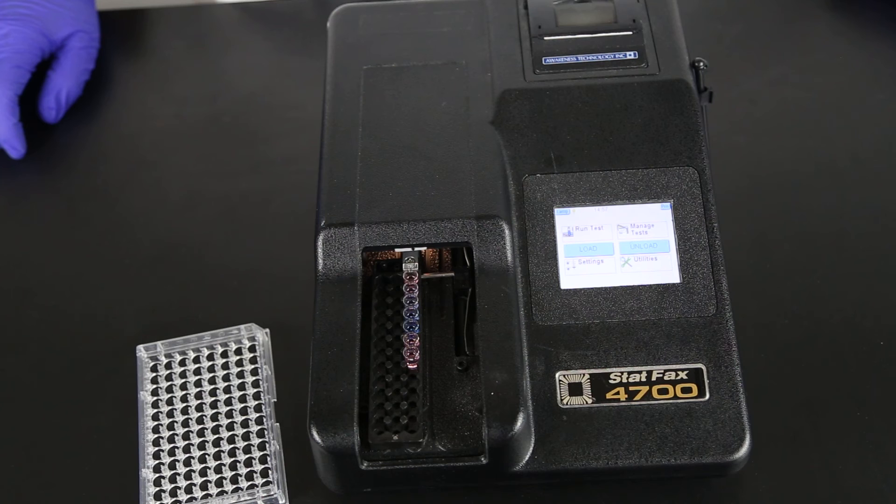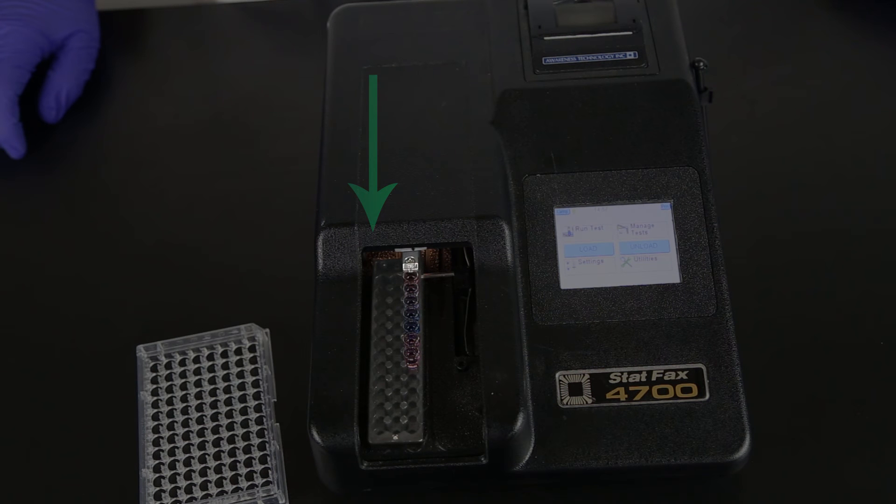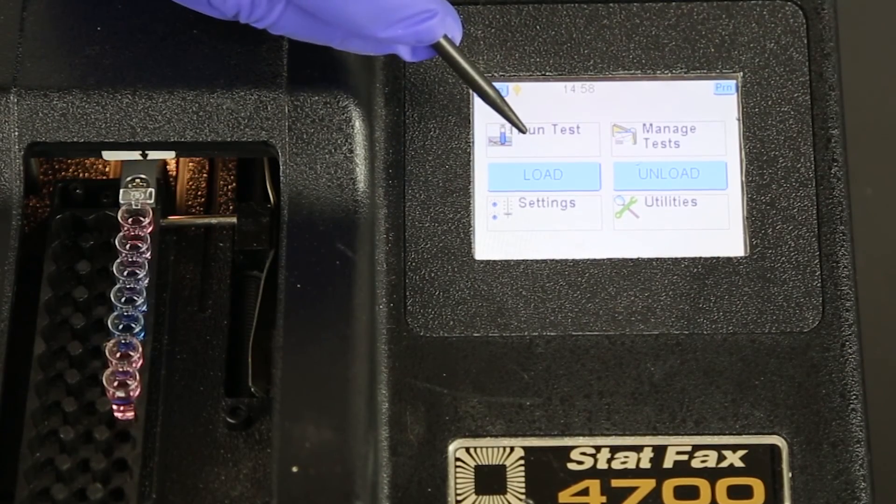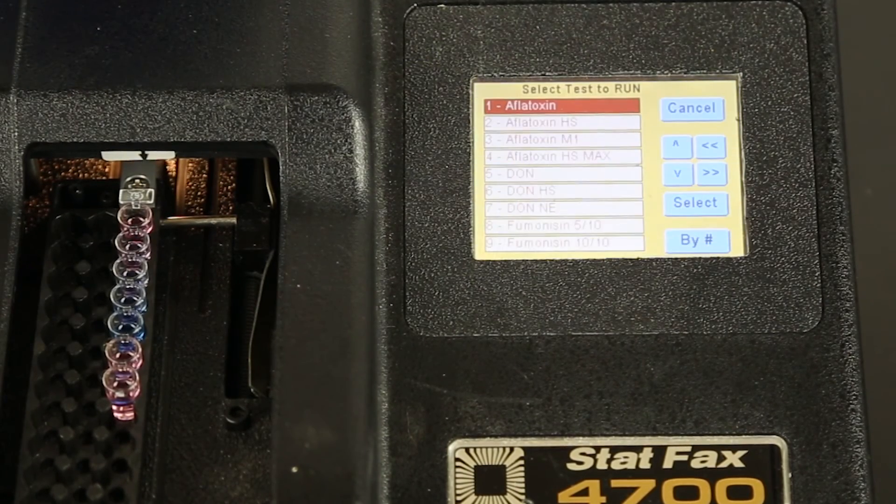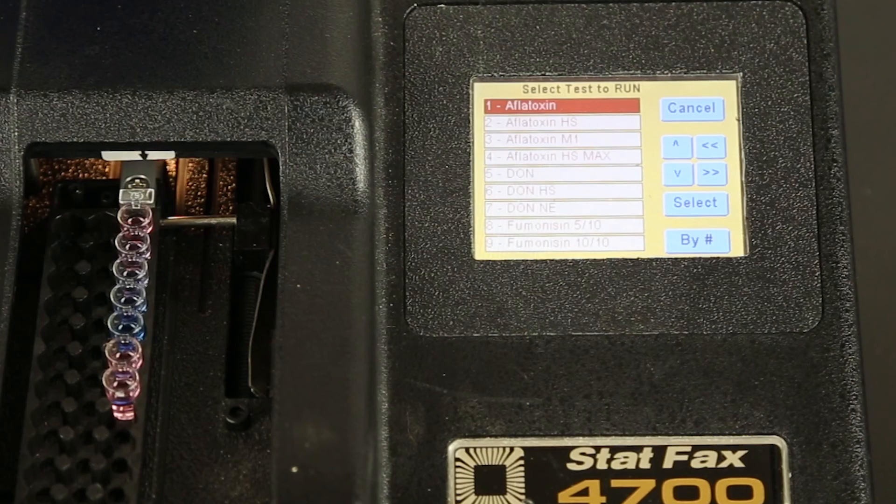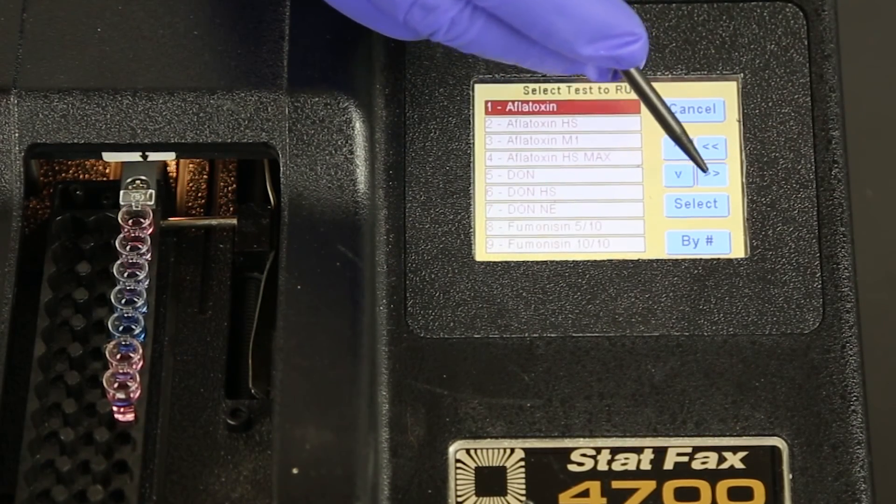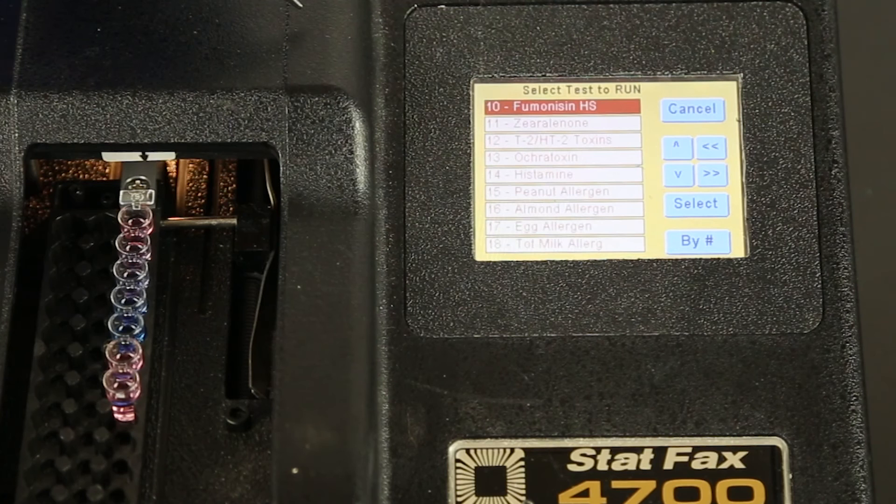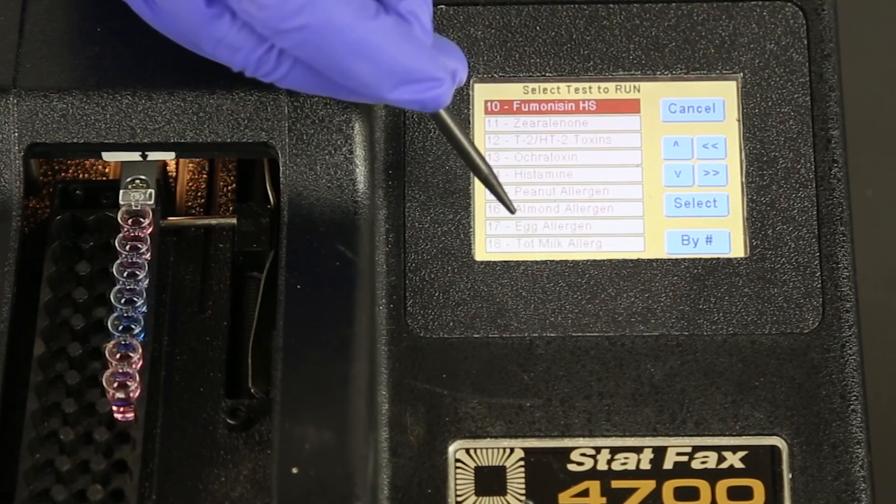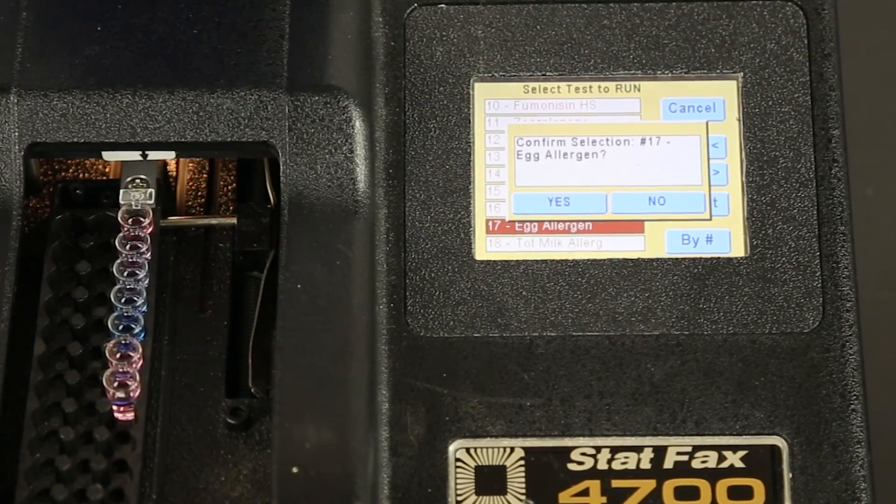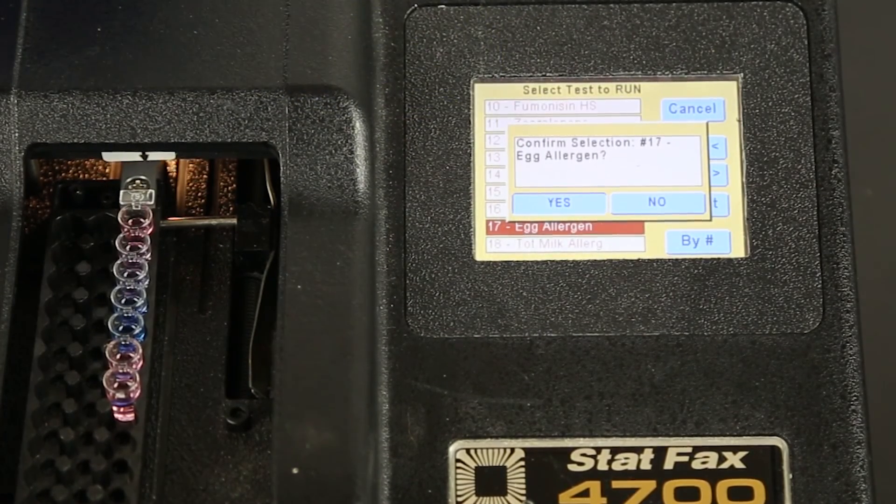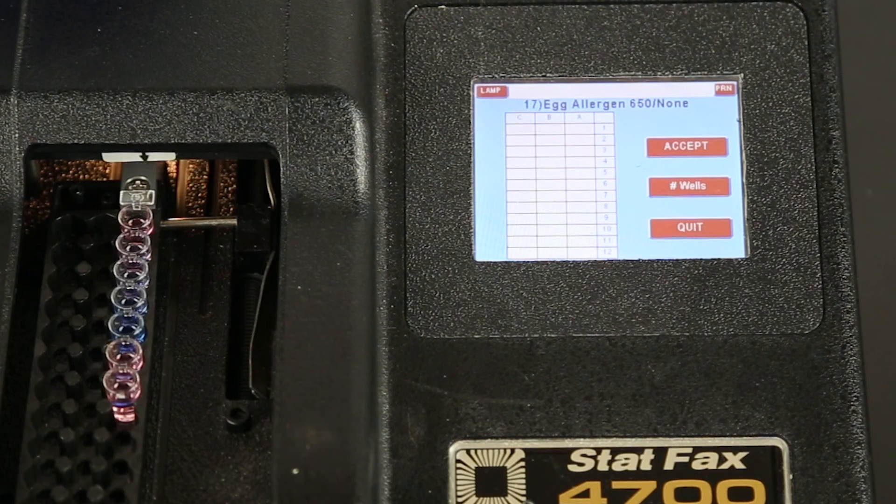Using the 4700 reader, position the carrier to the left so strip A is in the center of the track. Use the run test key to access the user's test menu. The instrument will display the pre-programmed tests. Press arrow up or down or advance page to locate the correct test. Or, if you know the test number, press by number, enter the test number, and press enter. For this example, we are running the Veritox for egg allergen. Confirm the test selection or press no to select a different test.